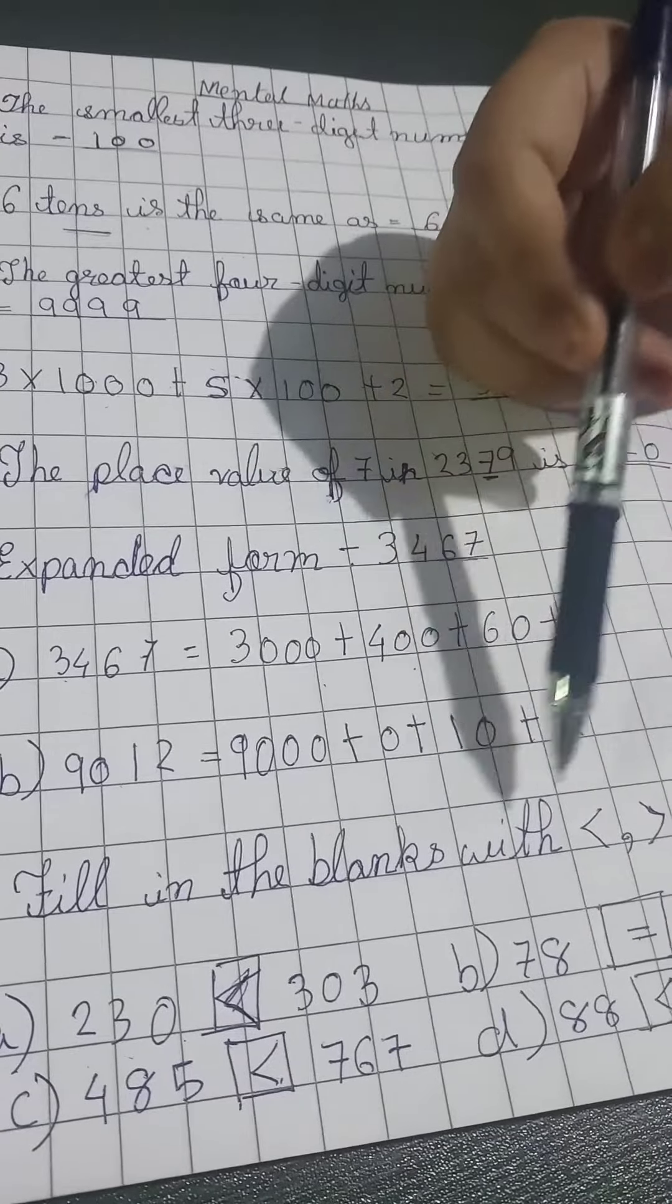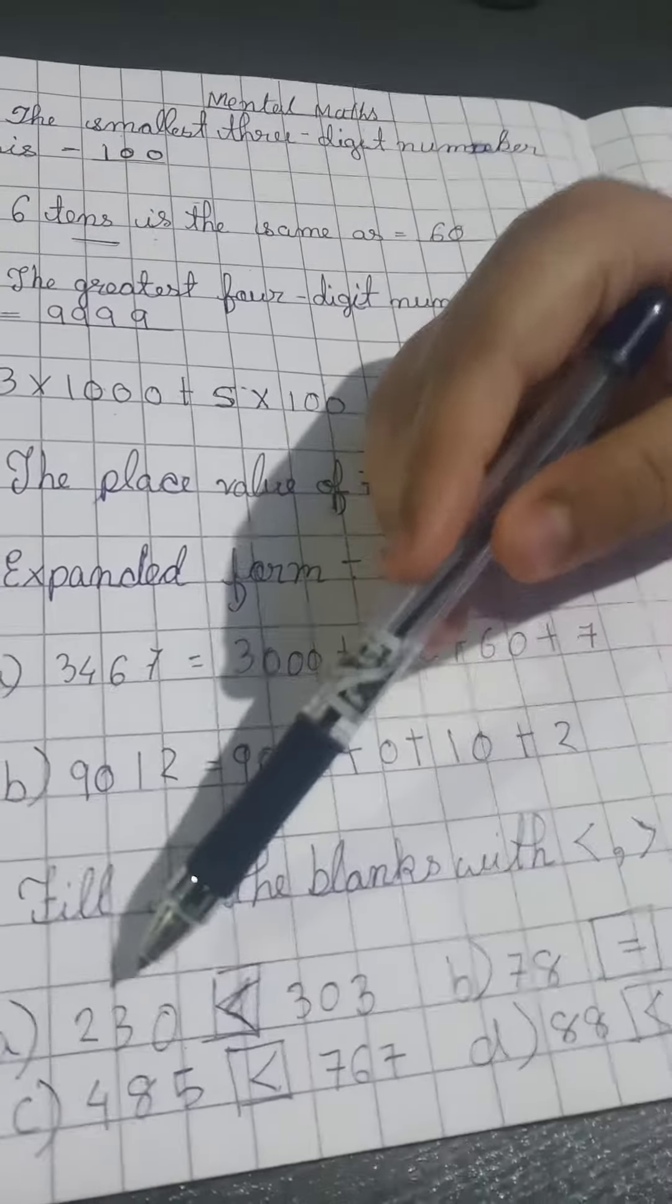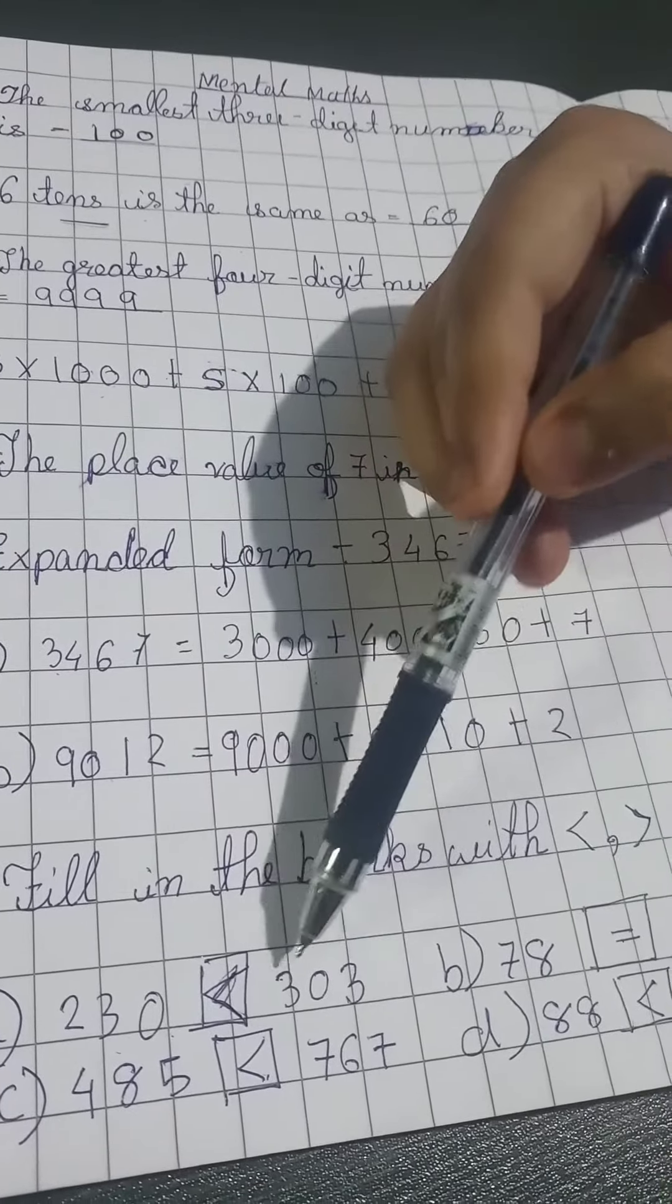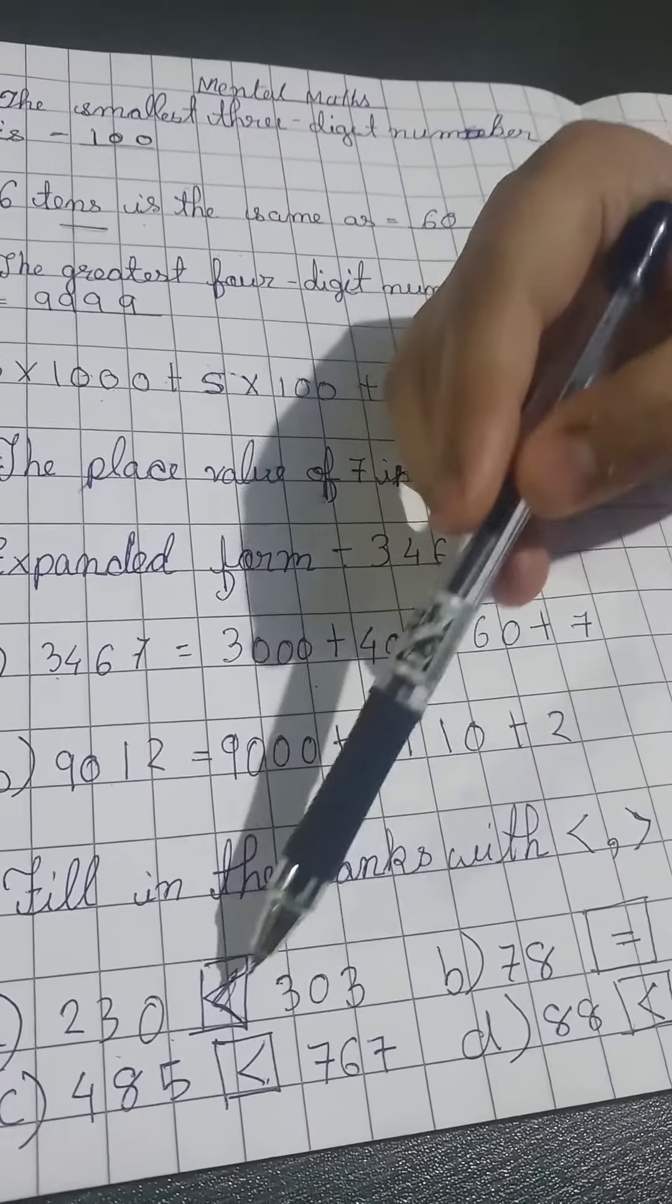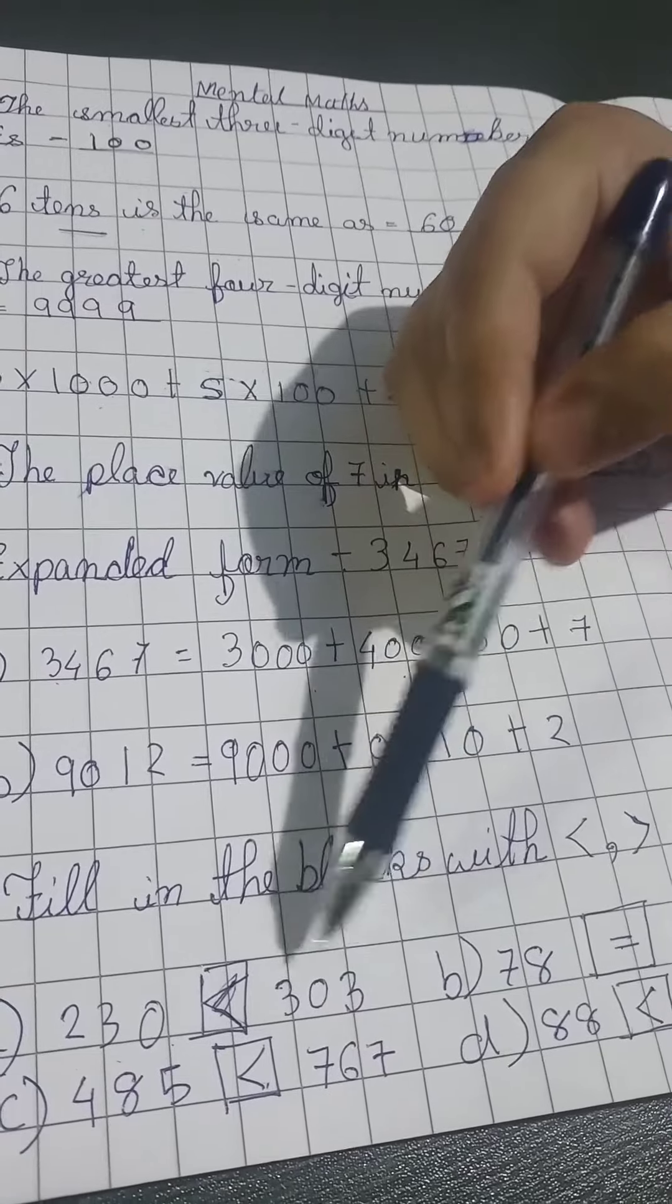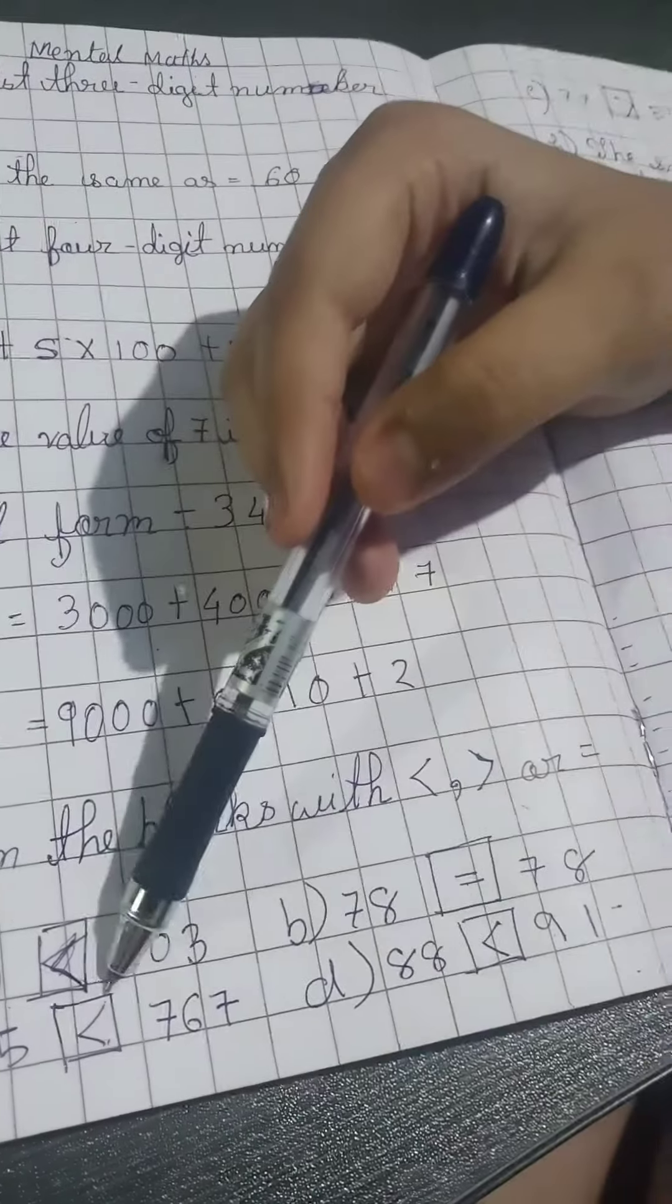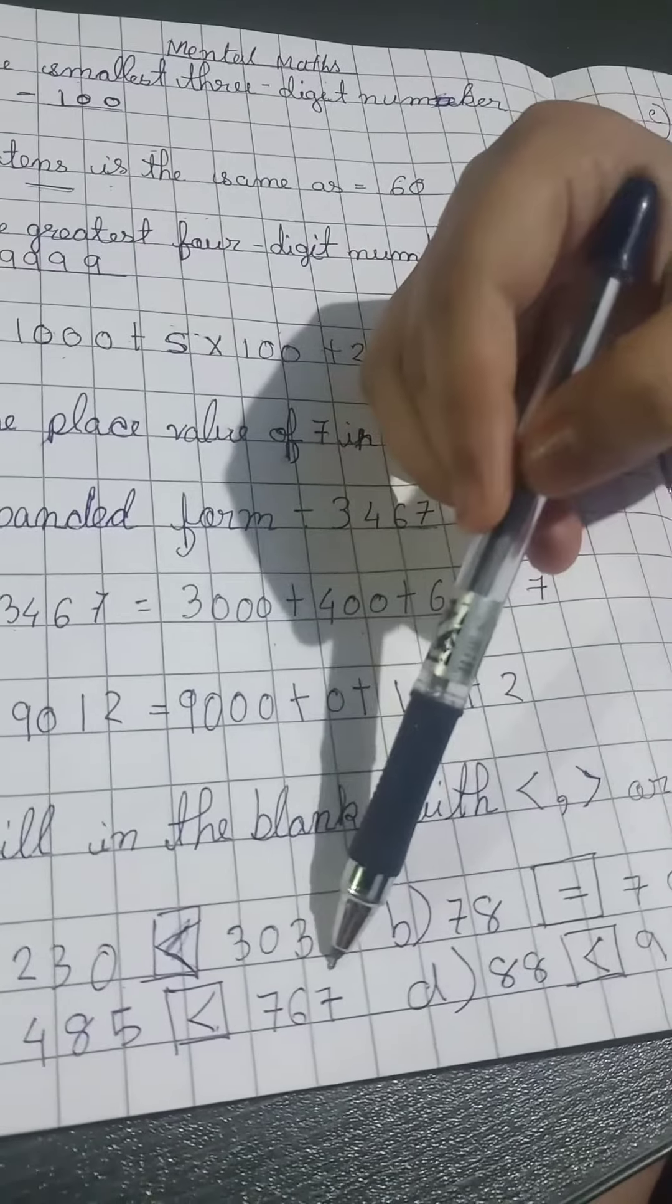Fill in the blanks with the symbols. 230 and 303 - 303 is the greater, so we put the symbol here. This one is equal, and this one is greater, so we put the symbol here.